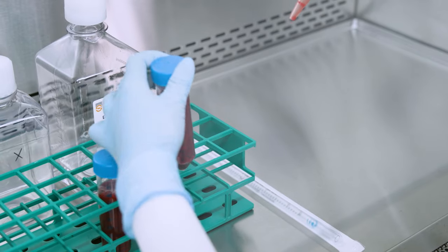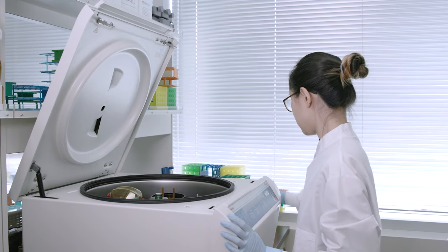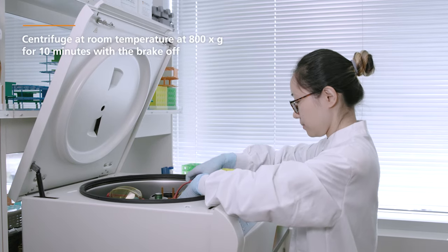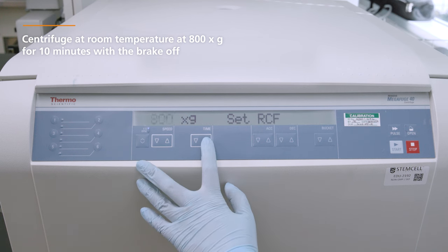Tighten the tube's cap and be sure to properly dispose of the pipette. Next, centrifuge the sample at room temperature at 800 times G for 10 minutes with the brake off.